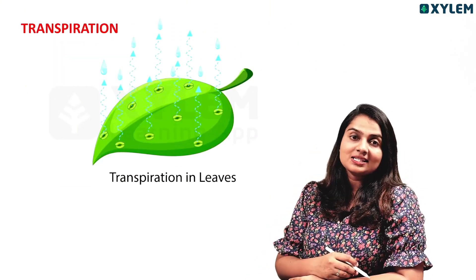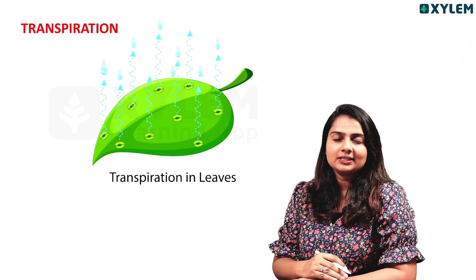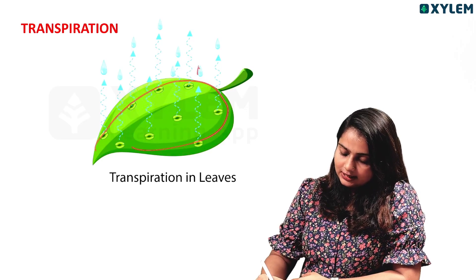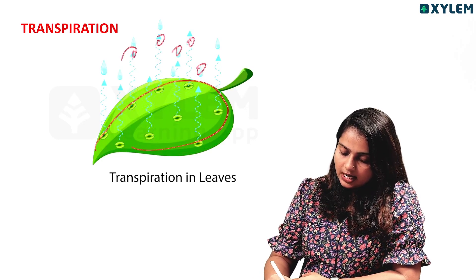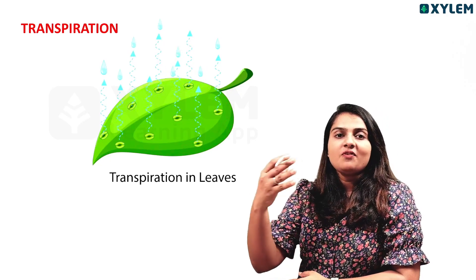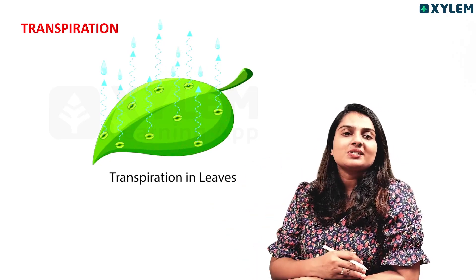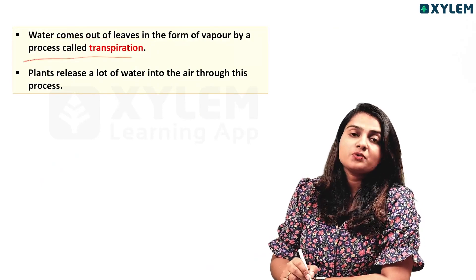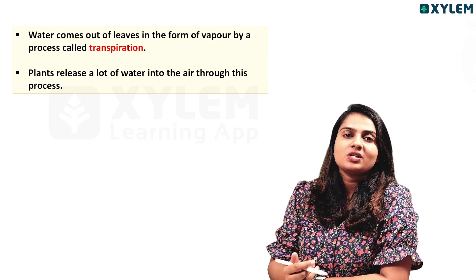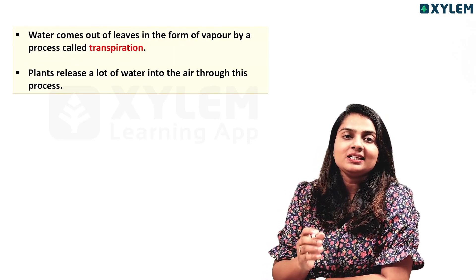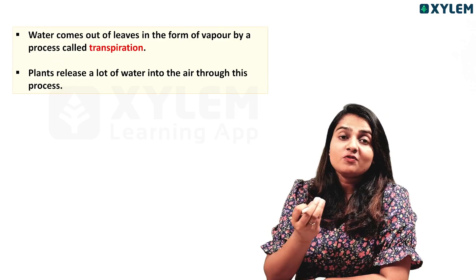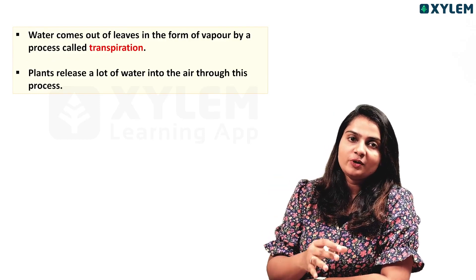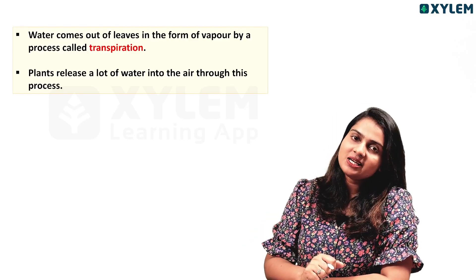The next topic is Transpiration. What is Transpiration? This process is called Transpiration. When water comes out of leaves in the form of water vapor, it is called Transpiration.